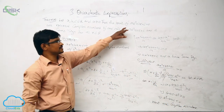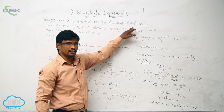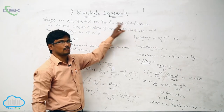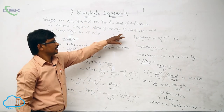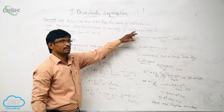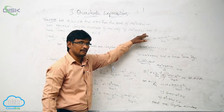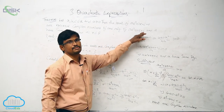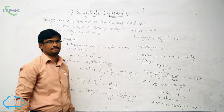If Ax squared plus Bx plus C equal to 0 has complex roots, then Ax squared plus Bx plus C and A have the same sign. This establishes the necessary and sufficient condition.